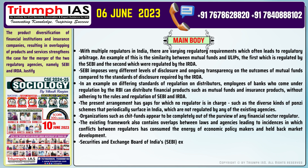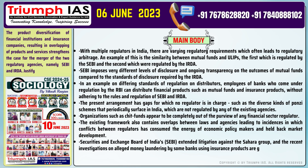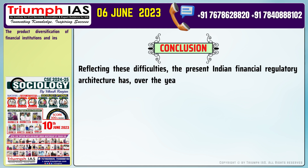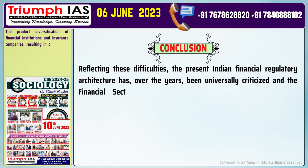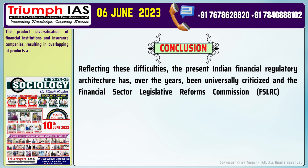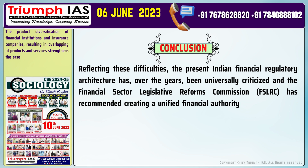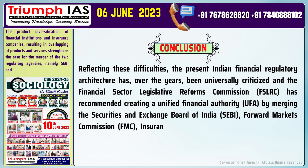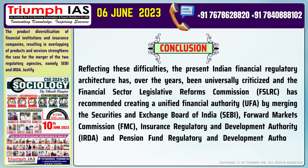Point 7: SEBI's extended litigation against the Sahara Group and recent investigations on alleged money laundering by some banks using insurance products are good examples of both regulatory gaps and opportunities for arbitrage. Conclusion: Reflecting these difficulties, the present Indian financial regulatory architecture has been universally criticized. The Financial Sector Legislative Reforms Commission (FSLRC) has recommended creating a Unified Financial Authority (UFA) by merging SEBI, the Forward Markets Commission (FMC), the Insurance Regulatory and Development Authority (IRDA), and the Pension Fund Regulatory and Development Authority (PFRDA).